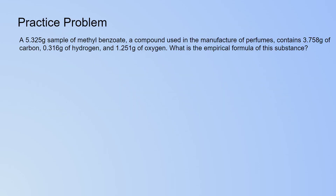Now here is a practice problem. A 5.325 gram sample of methyl benzoate, a compound used in the manufacture of perfumes, contains 3.758 grams of carbon, 0.316 grams of hydrogen, and 1.251 grams of oxygen. What is the empirical formula of this substance? You don't need to convert from percentage here — you start with grams, so you just convert from grams to moles. You should try this problem now.